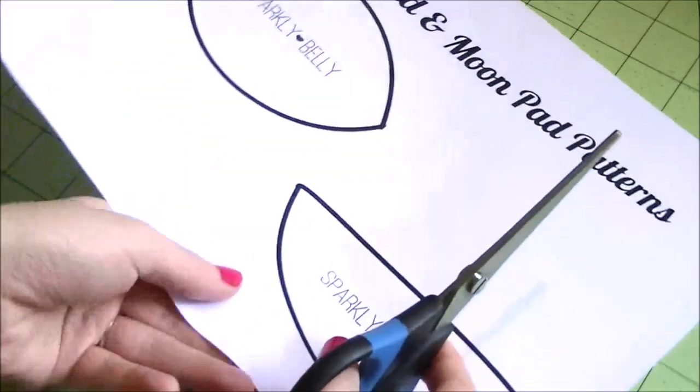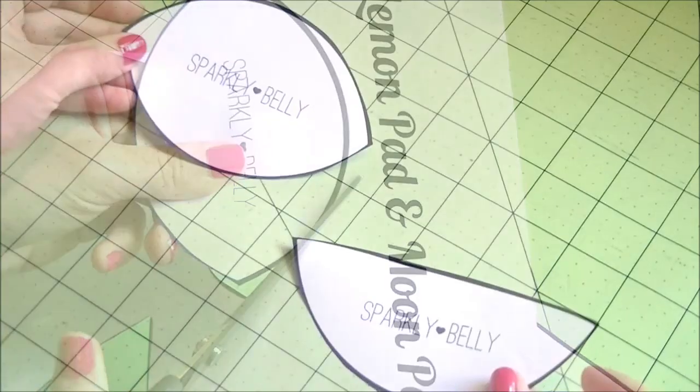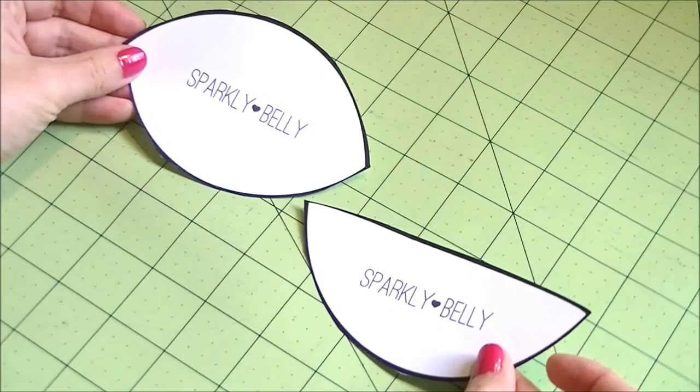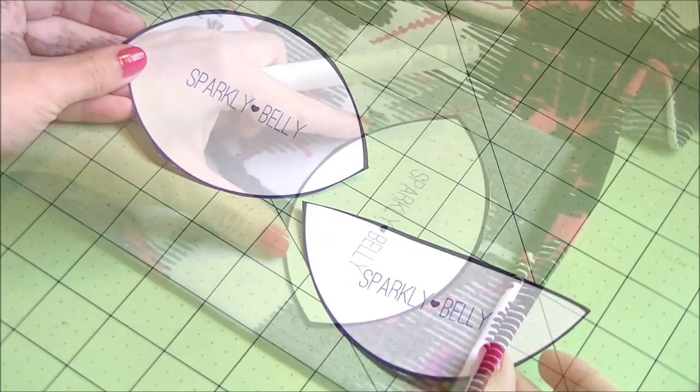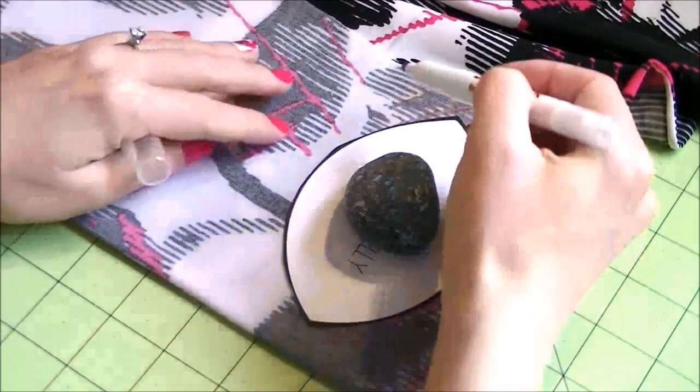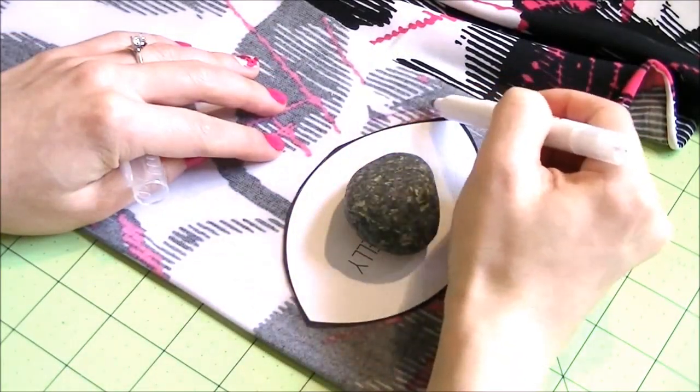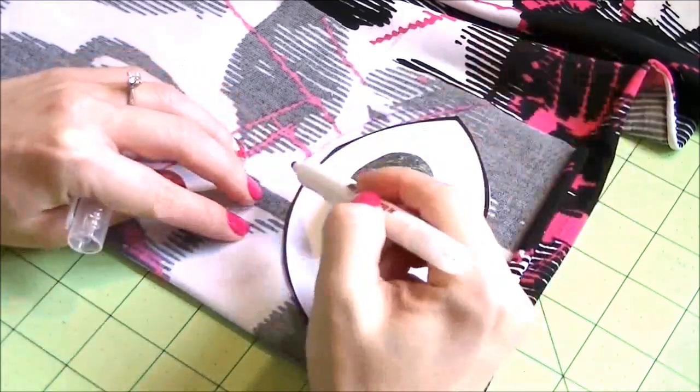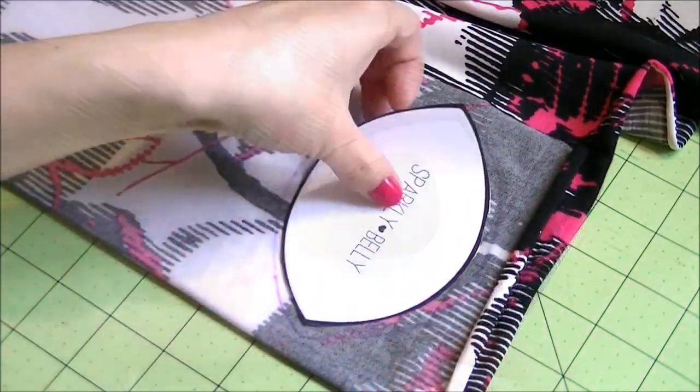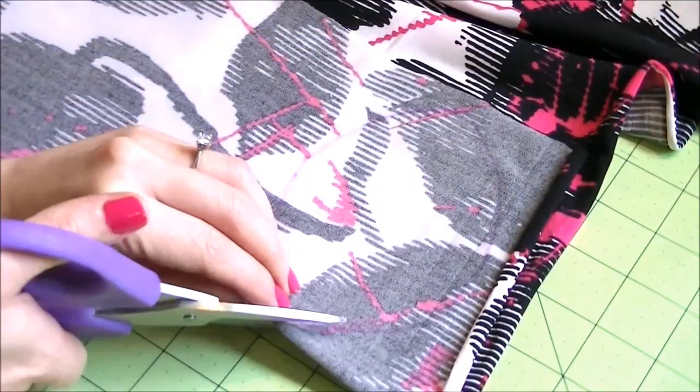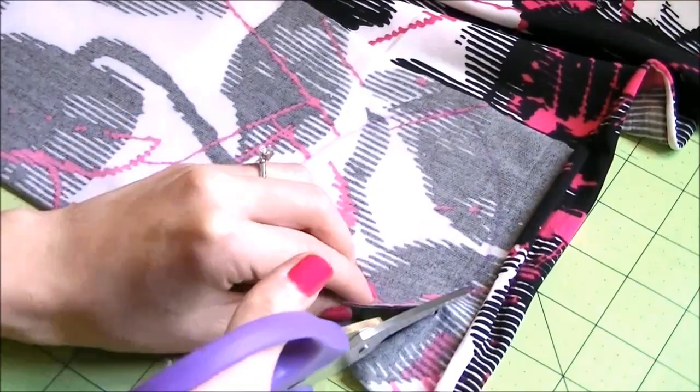So first, print out the patterns and cut along the lines. One pattern for the lemon pad and another one for the moon pad. Then place one of the patterns on your fabric and trace it with 5mm or a quarter of an inch seam allowance, or you can just eyeball it and cut. Make four of these for each pattern.